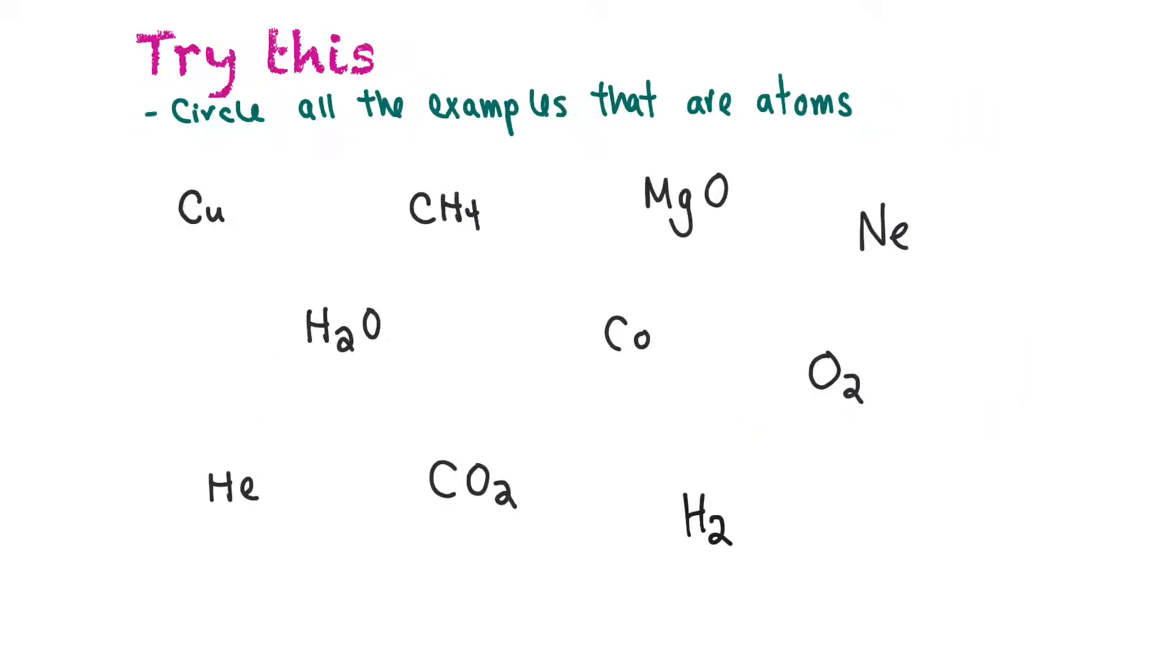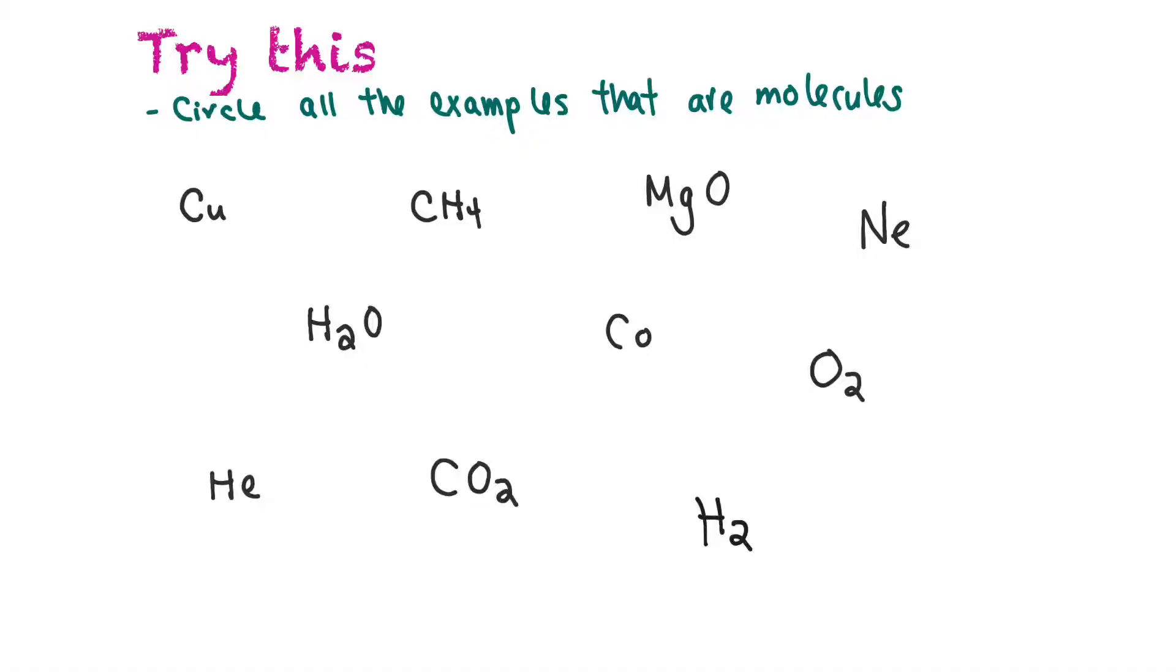Now we're going to put what we've just learned to the test. First, we're asked to circle all the examples that are atoms. Remember, atoms are just made of one element and not more than one of those same elements combined together. The first one would be copper (Cu), there's only one. Cobalt (Co) is another example. He (helium) is another example, and then finally Ne (neon) is a final example. These are all the atoms on this page.